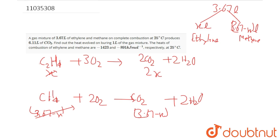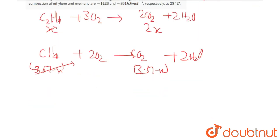The total CO2 obtained is 6.11 liters, so according to the question, 2x plus 3.67 minus x equals 6.11. Solving this, x equals 2.44.